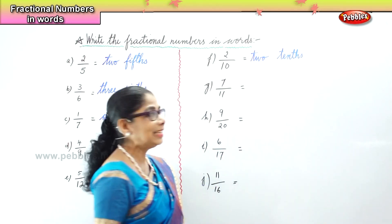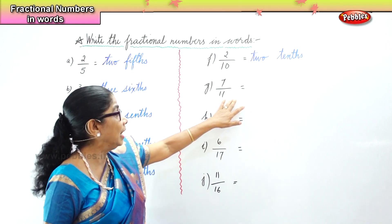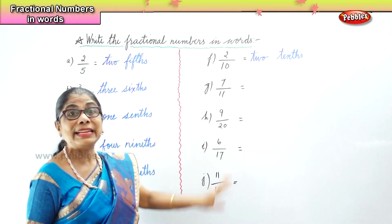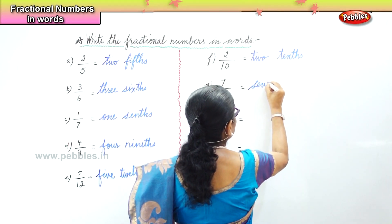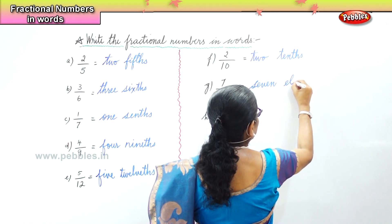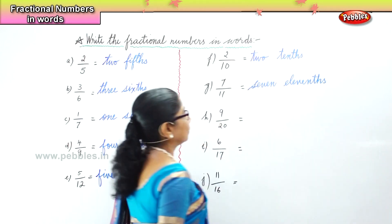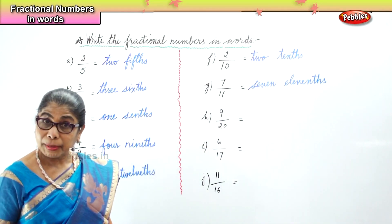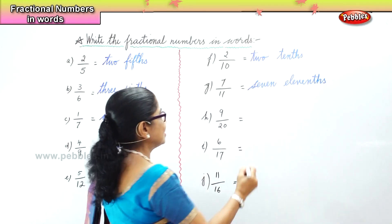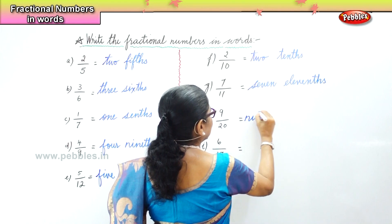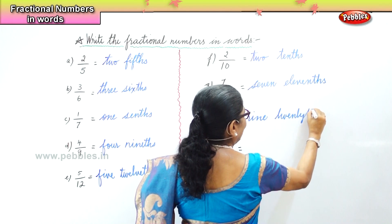Next we have 7 by 11 — seven parts out of eleven parts — you will write seven elevenths. Next we have 9 parts out of 20 — nine twentieths.